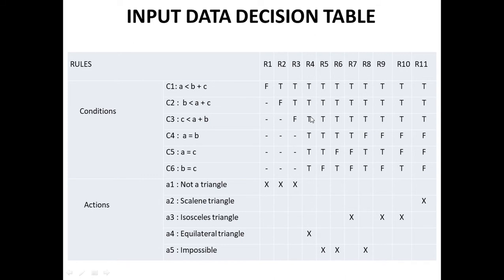Once all three conditions are satisfied, we move to C4, C5, C6 — it is not required that all of these are satisfied; the first three conditions must be satisfied to form a triangle. In rule number four, all three conditions are true, and then C4 is true, C5 is true, C6 is true — meaning a equals b, b equals c, and c equals a. All three sides are equal, so the action is equilateral triangle.